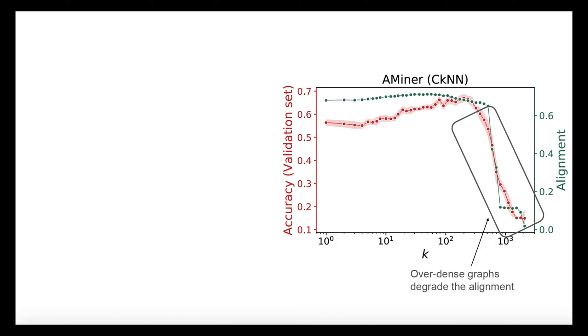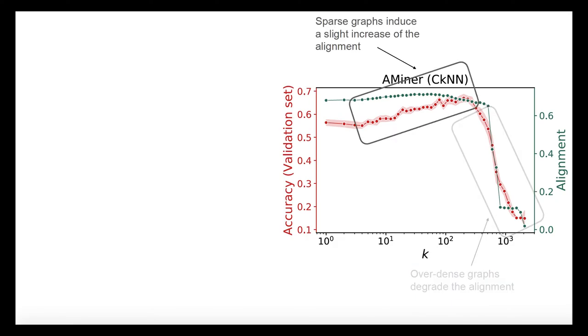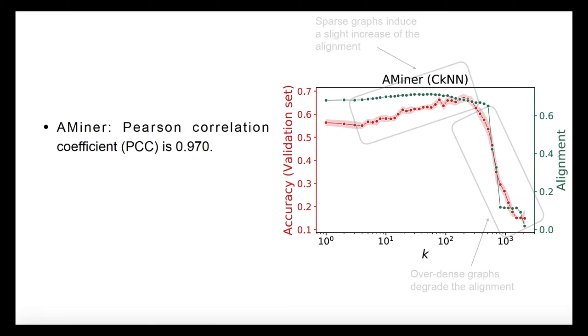And for sparse graphs, on the other hand, they induce a slight increase of subspace alignment at the same time as improving the classification accuracy. The alignment and classification accuracy show good correlation for the AMiner, and the Pearson correlation between them is 0.970. And the same process has been carried out for all seven datasets, and the average correlation coefficient is 0.852.